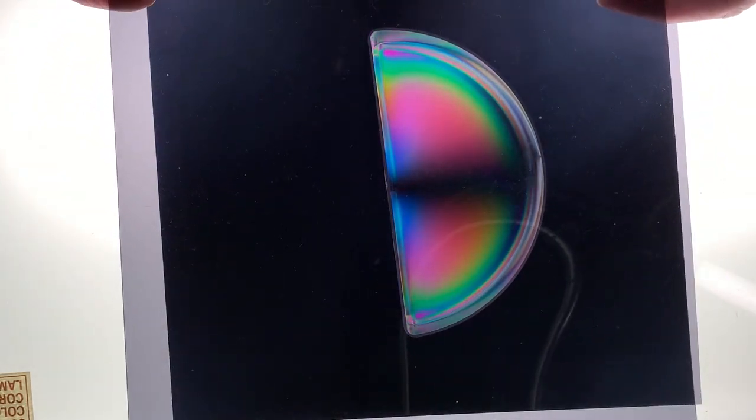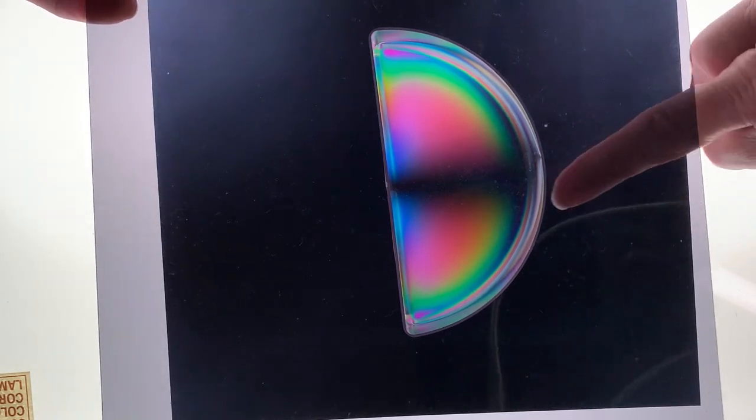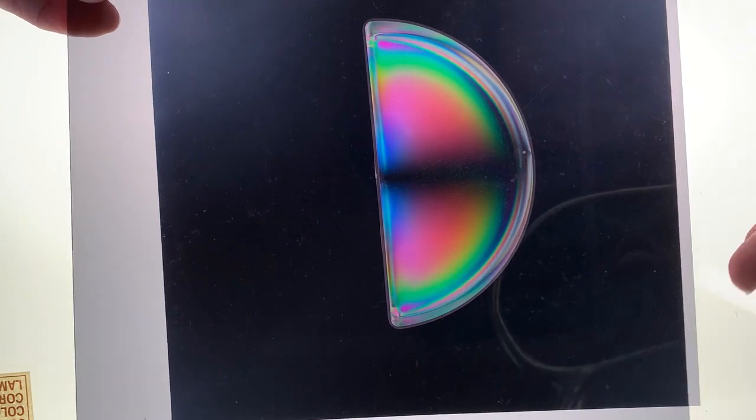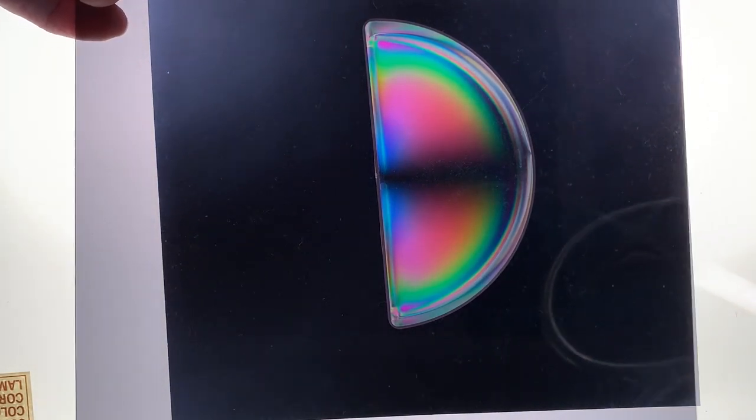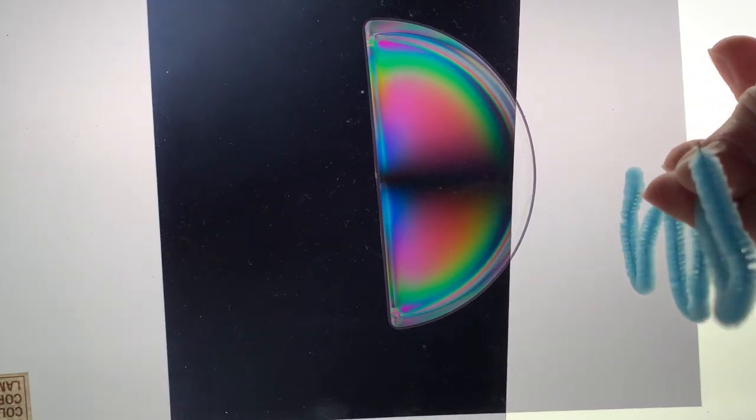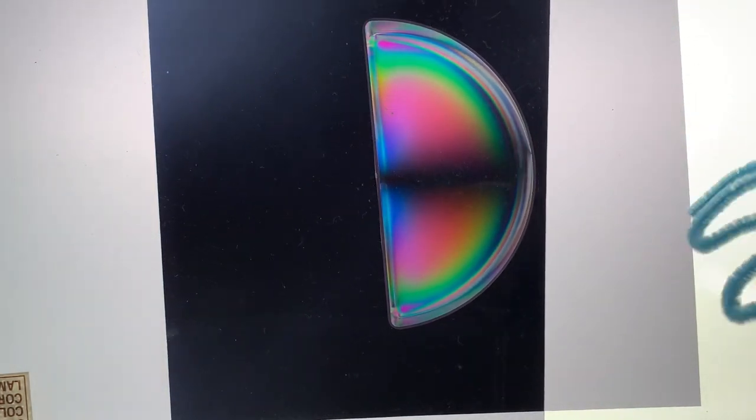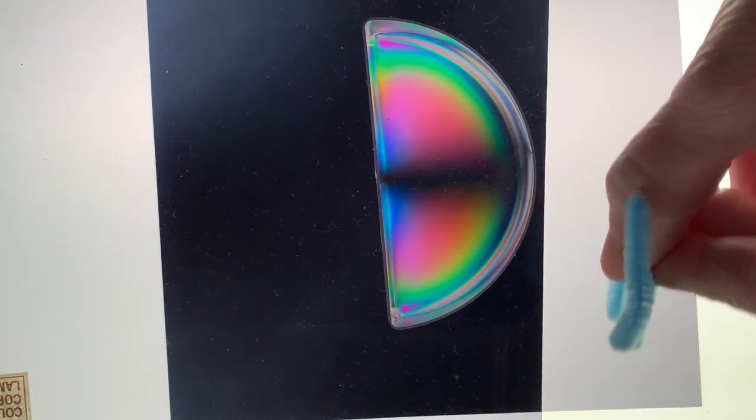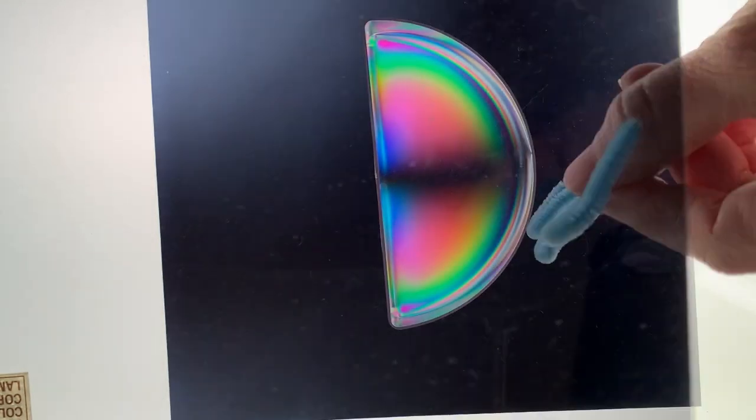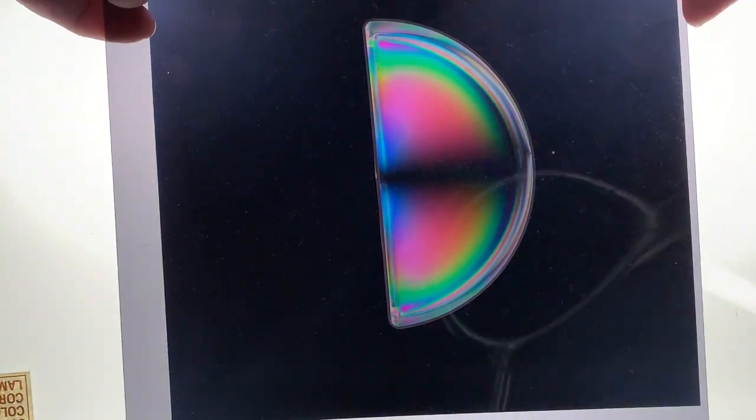So here it's crossed polarizers. So when there's no plastic in here, none of the light gets through. But when the light goes through the plastic, it actually rotates the polarization of the light. So let's say the polarization is like this, it's oscillating vertically, and then it enters the plastic. As it goes through the plastic, it actually rotates a little bit. So now when it gets to the second polarizer, a small fraction of it can get through.